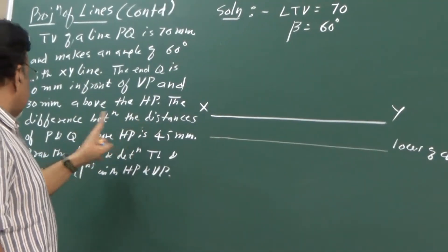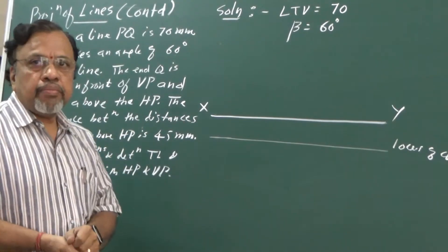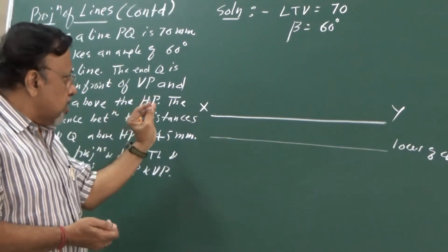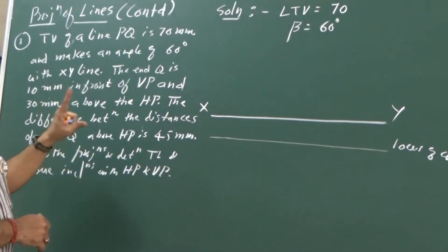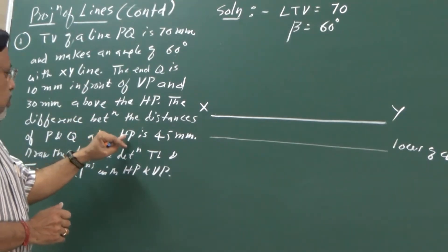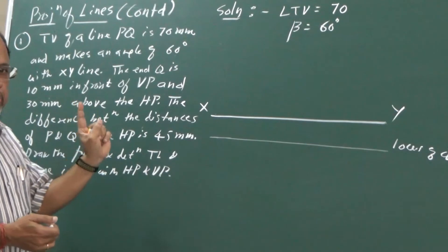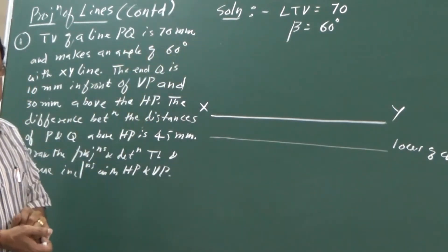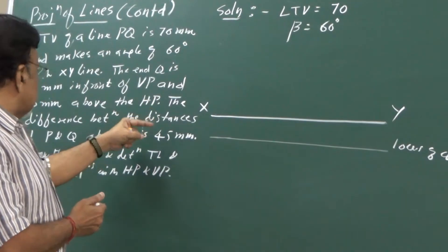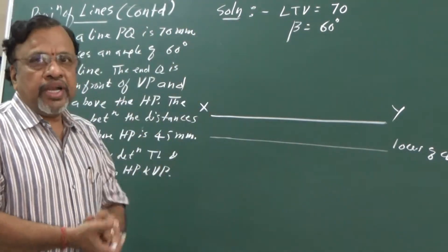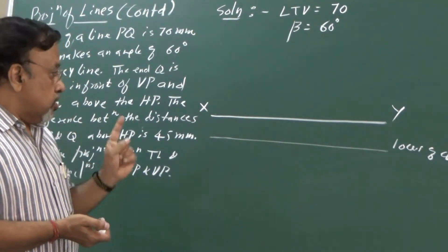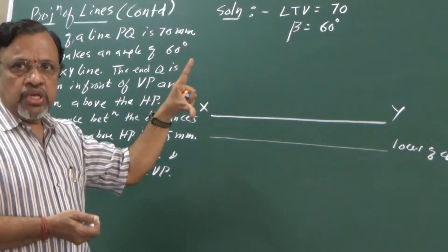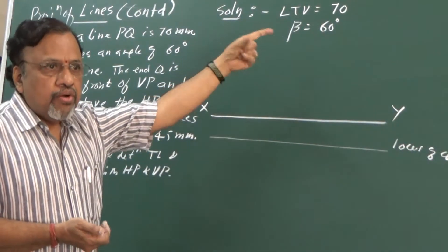The difference between the distances of P and Q above HP is 45 mm. This type of statement was not given in previous problems. If we carefully observe: since both are above HP, the details are given in the front view. In the front view we get the locus of P-dash and locus of Q-dash, and the difference between their distances above HP means the distance between locus P-dash and Q-dash is 45 mm.